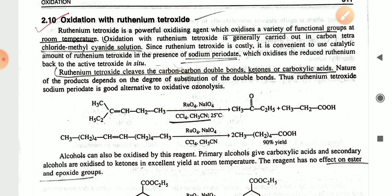Ruthenium tetraoxide breaks carbon-carbon double bonds and gives a ketone or a carboxylic acid. The nature of the product depends on the degree of substitution of the double bond. Ruthenium tetraoxide with sodium periodate is a good alternative to oxidative ozonolysis.